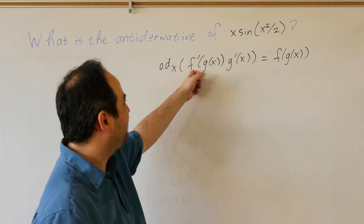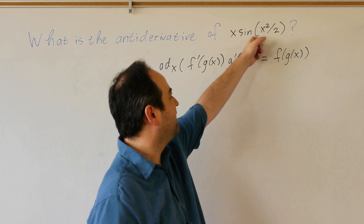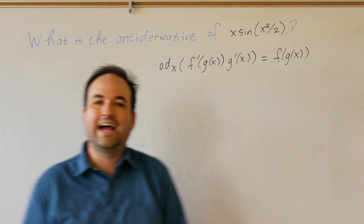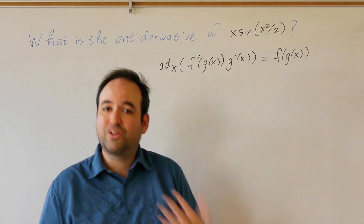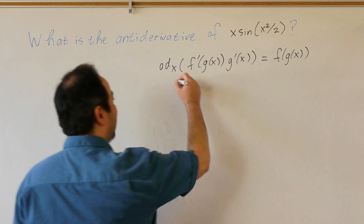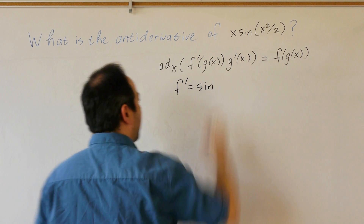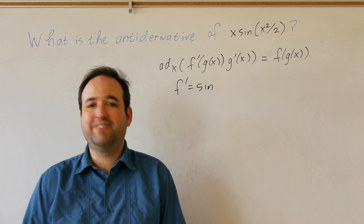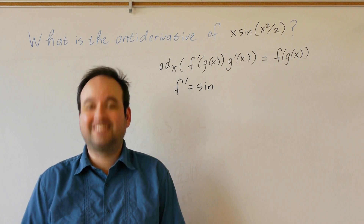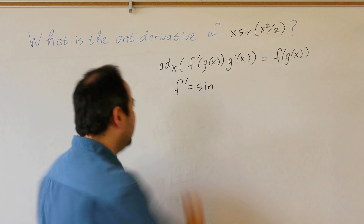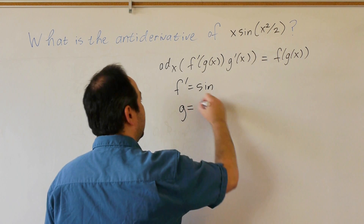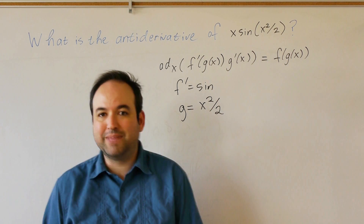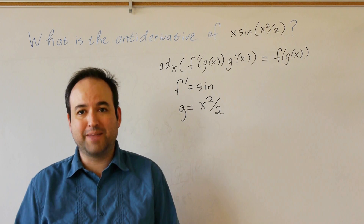Our f prime is always the function on the outside. Here we have sine of x squared over 2, so the outside function is sine — that will be our f prime. This makes g of x the function inside the outer function, so g equals x squared over 2. Once we have f prime and g, we can find f and g prime pretty easily.